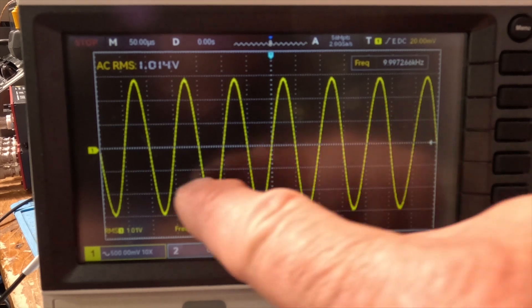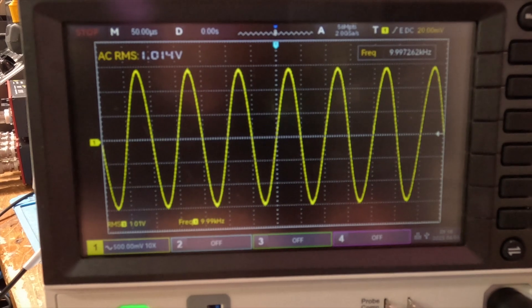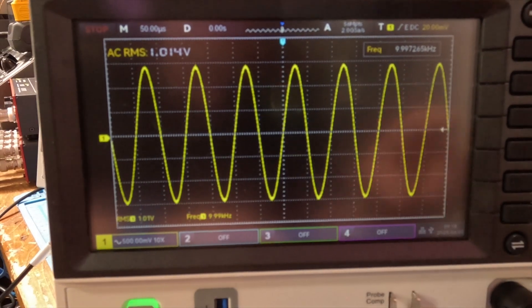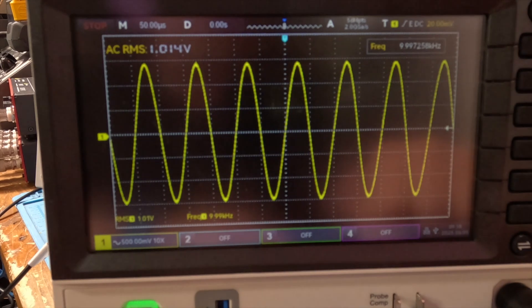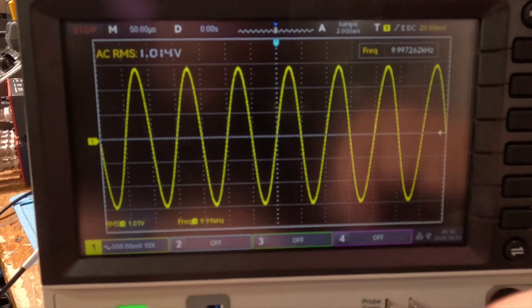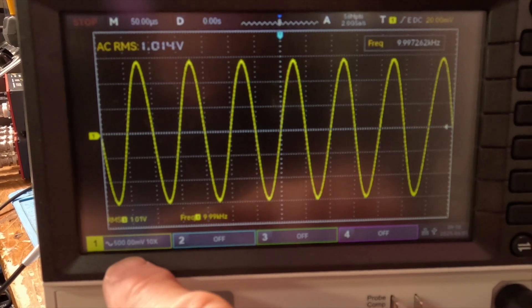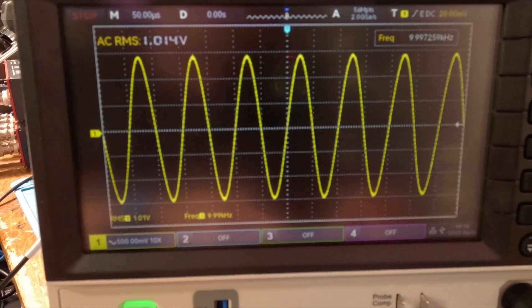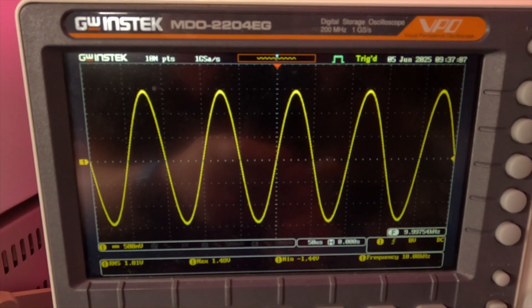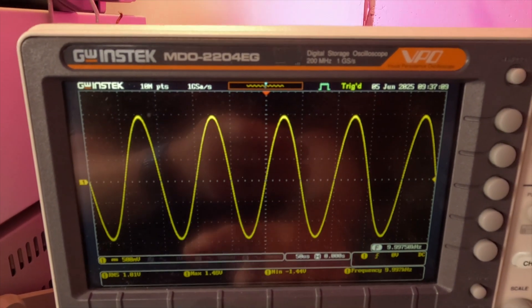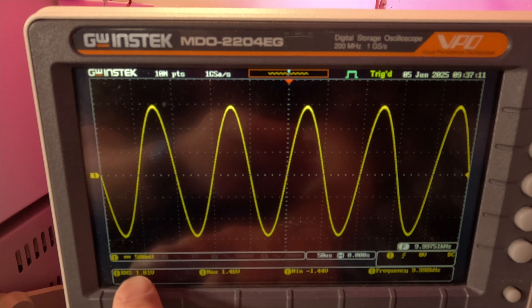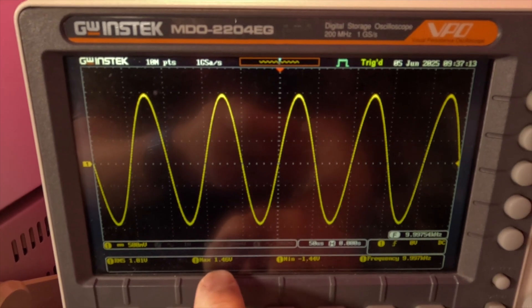Okay, so but it's the same settings, 50 microseconds per division and 500 millivolts per division, same as the Rigol. Alright guys, and the GW Instek, same thing, 1.01 volts.